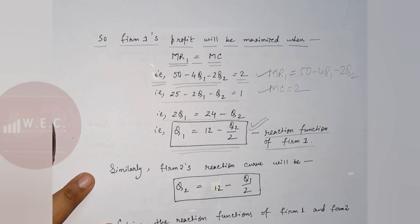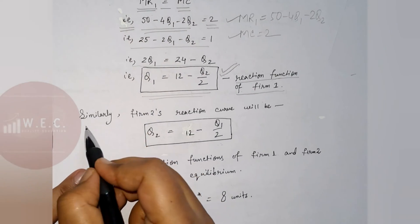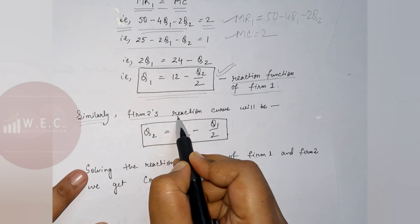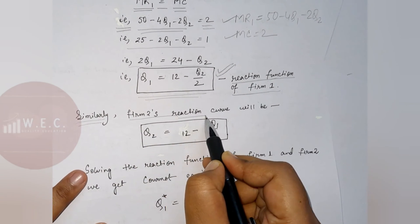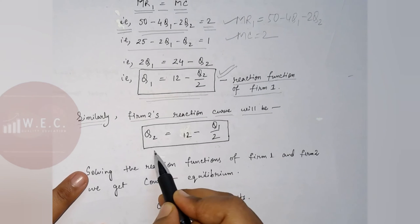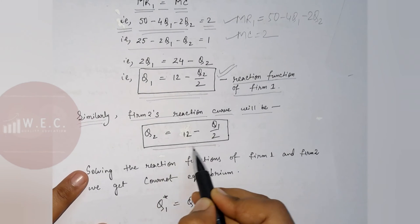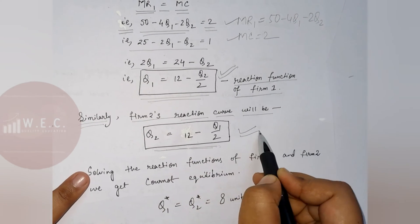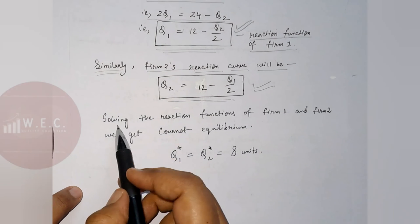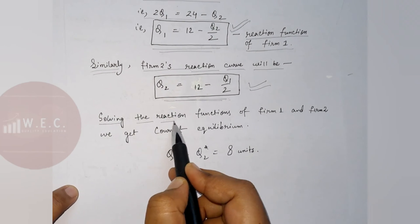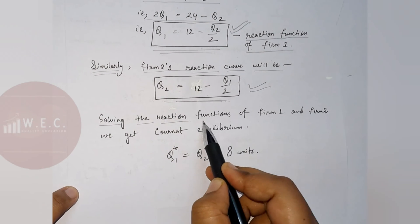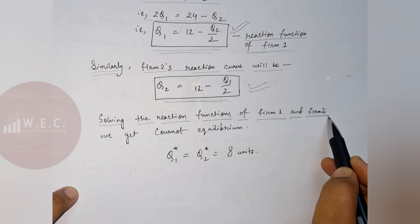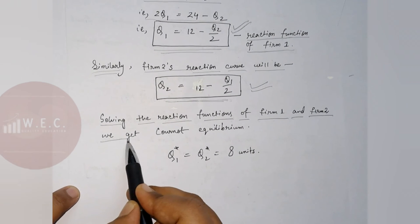Using the same process, we can derive the reaction function of Firm 2 as well. The reaction function of Firm 2 is Q2 equals 12 minus Q1 divided by 2. Solving these two reaction functions — the reaction function of Firm 1 and the reaction function of Firm 2 — we can get the Cournot equilibrium.